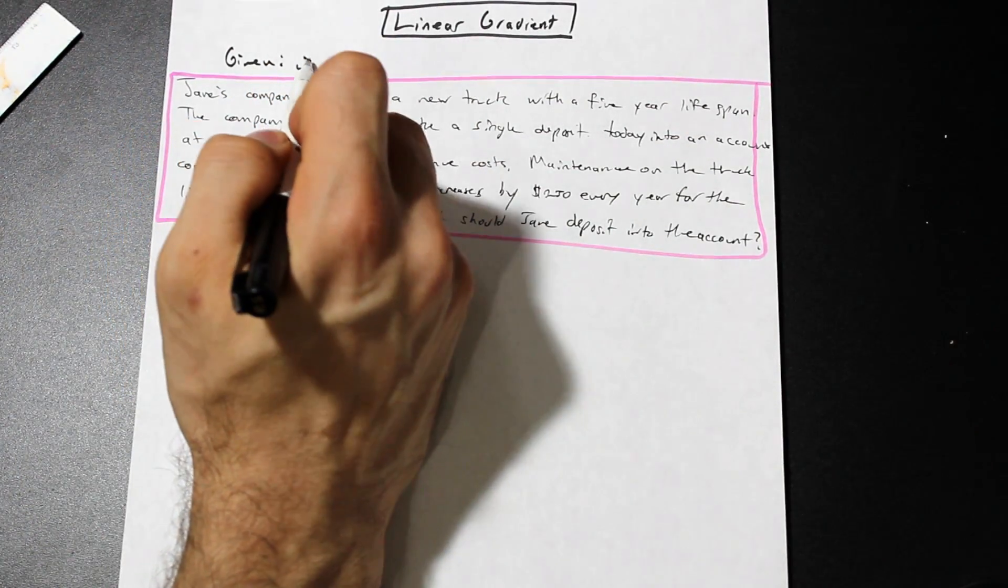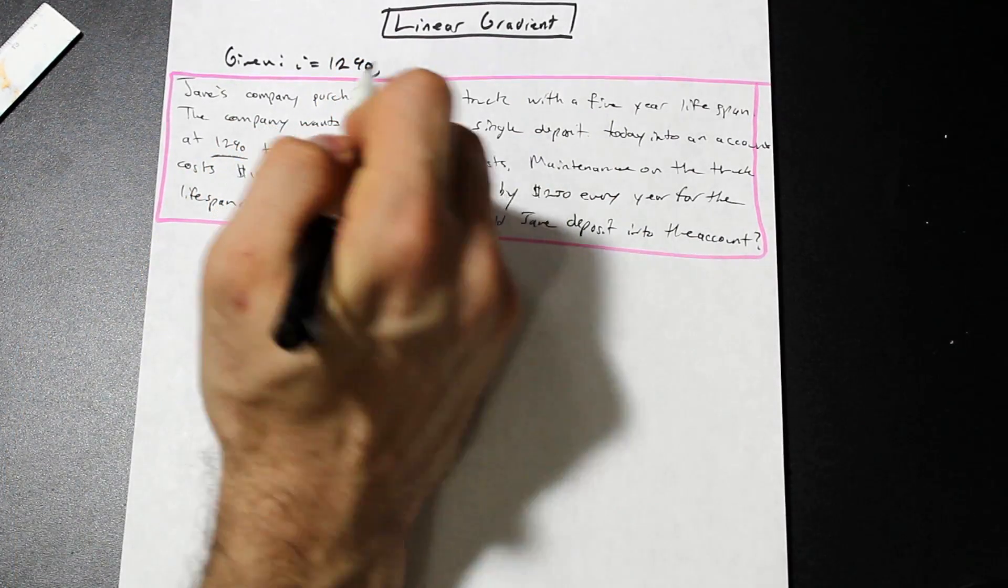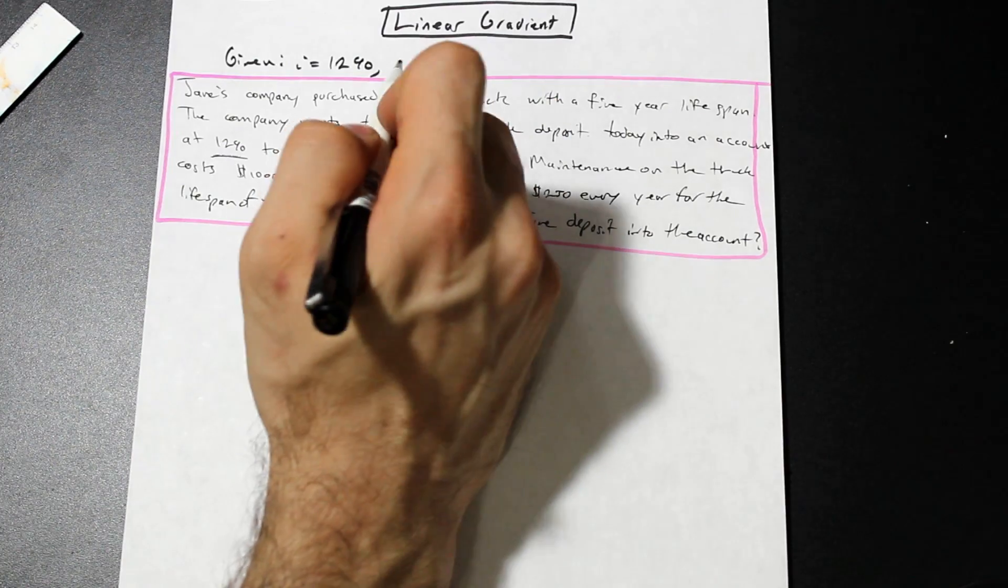Jane's company purchased a new truck with a five-year lifespan. The company wants to make a single deposit today into an account at 12% to cover all maintenance costs. Maintenance on the truck costs $1,000 after year one and increased by $250 every year for the lifespan of the truck. How much should Jane deposit into the account today? Let's write down what we're given here. So we are given I, I in this case is 12%, and the number of years is five, five-year lifespan on the truck.